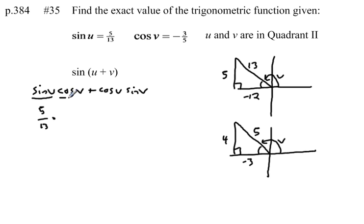Now I'm looking for the cosine of v. We're looking at this triangle down here with the angle of v in it. The cosine of v equals, cosine is from SOHCAHTOA, adjacent over hypotenuse. So it's negative 3 over 5.